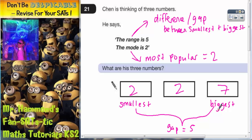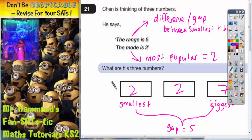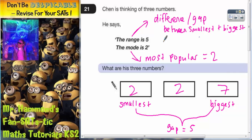Let's just double check that both clues fit with these numbers. Is the mode two? Yes, because there are more twos than anything else. Is the range five? Yes, because the gap between two and seven is five. So both clues have been satisfied by our numbers. Therefore, we must be correct.